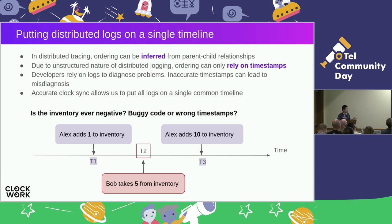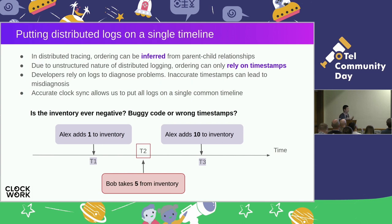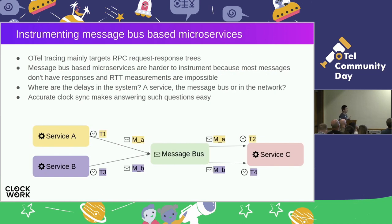In this example, we have two processes logging: process Alex and process Bob. The logs say Alex added 1 to the inventory at t1, Bob took 5 from the inventory at t2, and Alex added 10 to the inventory at t3. As a developer looking at these logs, I'd wonder: is there a bug in my code because the logs show the inventory went negative at t2? Or is it a timestamp problem — maybe clocks aren't synchronized? I would be wondering whether to spend time investigating this problem, and I wouldn't have any such doubts if I had accurate timestamps in the first place.